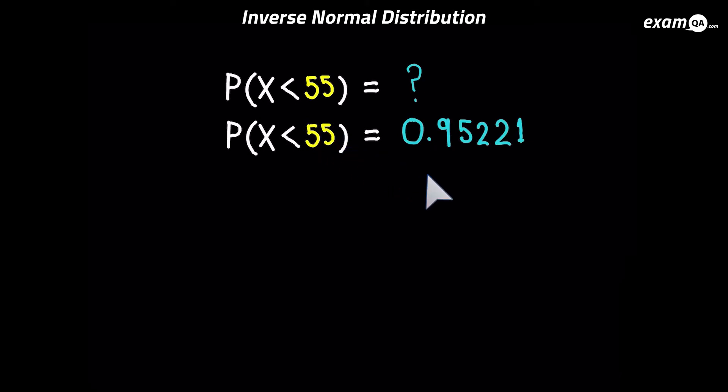And the inverse norm is going to be doing the exact opposite. You're going to have a situation like this where you've got probability x less than some value, some unknown, but you know the answer this time. It's 0.95221. Of course, this is the exact opposite of what we did, so you should be able to say what that unknown is. Of course it's 55. And that's exactly how the inverse works. It does the exact opposite operation. It's when you know the area and you're trying to work out that value.